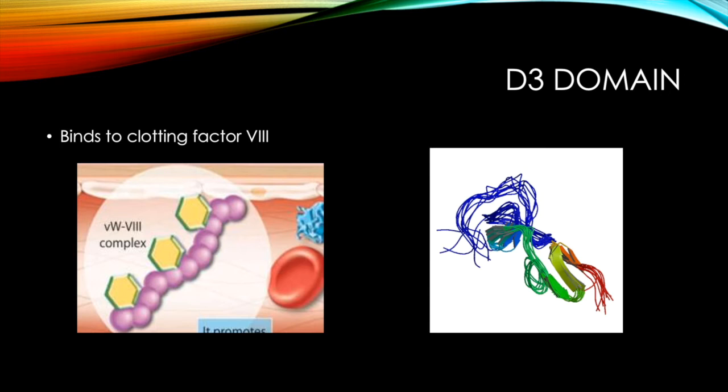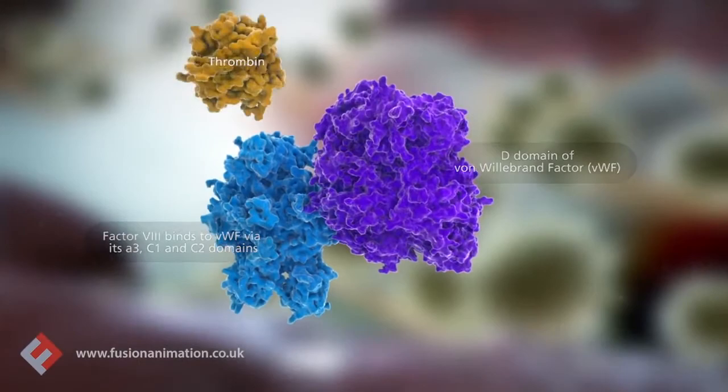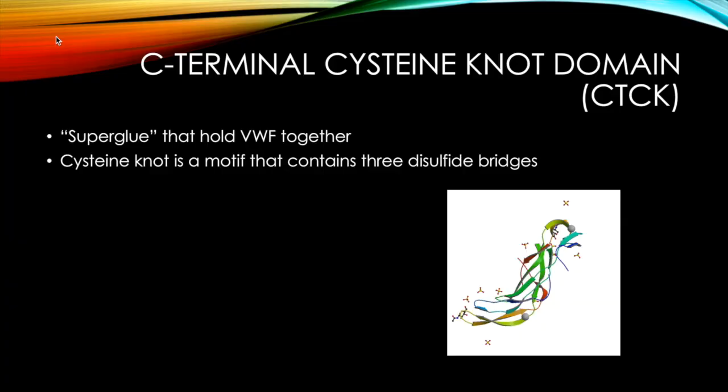Now that we've covered the three A subdomains, let's talk about the D3 domain, which binds to clotting factor VIII, an important blood clotting protein involved in the coagulation cascade. Specifically, the binding site consists of 272 amino acid residues. In addition, as shown in this animation, factor VIII travels with von Willebrand factor because the specific interaction between the two is necessary for the survival of factor VIII in the blood.